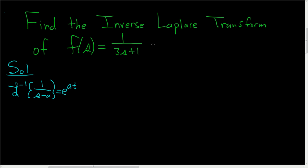So what we have here almost looks like that. So first we're going to rewrite what we have. So we have 1 over 3s plus 1. Well first we have to get rid of the 3.